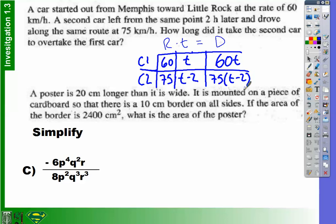Now, when car two overtakes car one, what can you tell me about their distance? Andrew? It would be the same. It would be the same. Absolutely. So, if the distances are going to be the same, then I can say 60T is equal to 75 times T minus two.